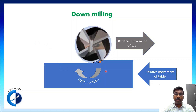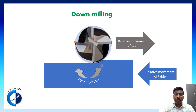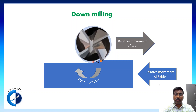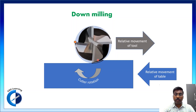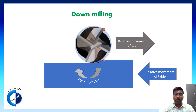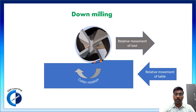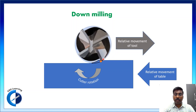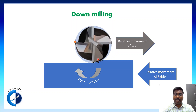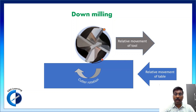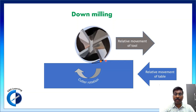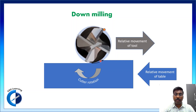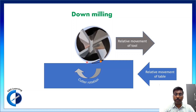In down milling, the chip thickness is high at the beginning of the cut and then it gradually reduces.